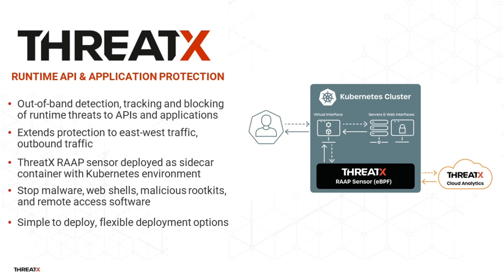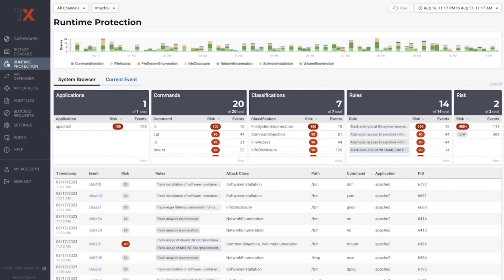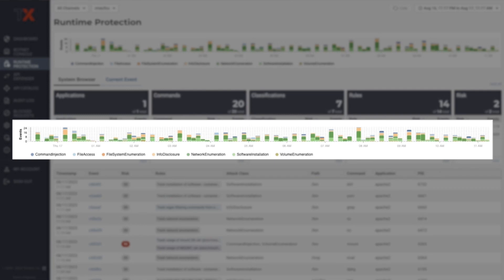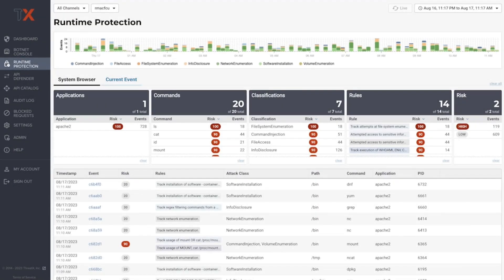ThreadX Runtime API and Application Protection is the first cloud-native solution to detect and block runtime threats to APIs and applications. Its patent-pending capability leverages EBPF to extend protection to the runtime environment and deliver real-time blocking. The ThreadX RAP solution is easily deployed as a sidecar container within a Kubernetes environment, enabling deep network flow and system call inspection, process context tracing, and advanced data collection, profiling, and analytics.